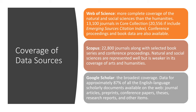Web of Science has more complete coverage of natural and social sciences than the humanities. It has more than 13,000 journals in its core collection and slowly adds conference proceedings and book data.